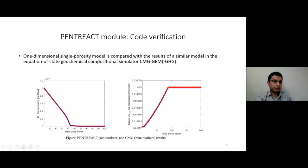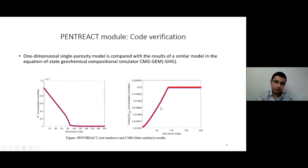We verified the code by considering a one-dimensional model. We injected acidified water into the leftmost grid block and produced it with a constant pressure from the rightmost grid block. The profiles shown include the dolomite concentration, which has undergone dissolution, and the distribution of hydrogen concentration in the model. I compared the results with CMG-GEM, and these are the comparisons.